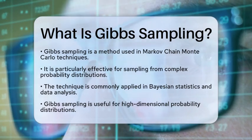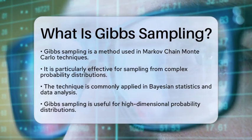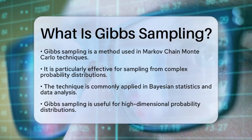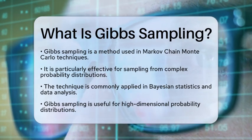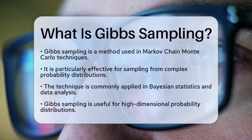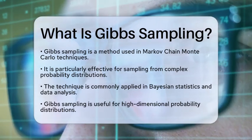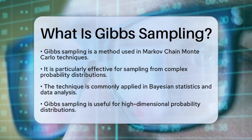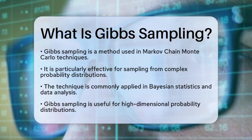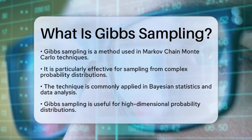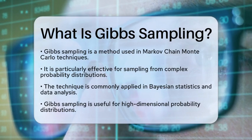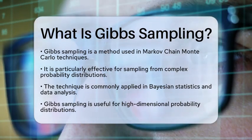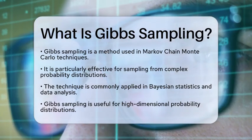Gibbs sampling is particularly useful when dealing with high-dimensional probability distributions. These distributions can be quite challenging to sample from directly. Instead of tackling the entire joint distribution at once, Gibbs sampling focuses on conditional distributions. This means you sample each variable based on the current values of the other variables.